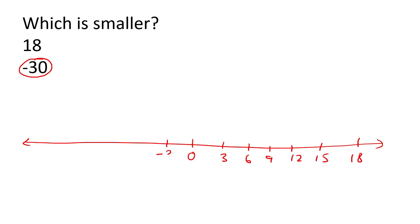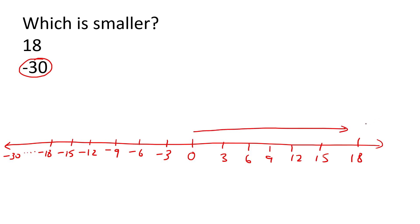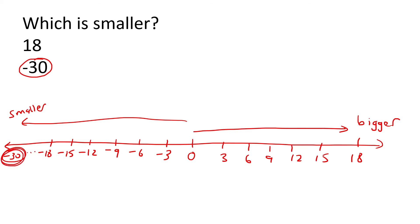Now, if you go in the negative, it starts negative 3, negative 6 — counting in 3s — negative 12, negative 15, negative 18, and then on and on, and eventually you would get to negative 30. Now, remember what we said in the very beginning of this lesson: as you go to the right, these numbers are getting bigger and bigger, and as we go to the left, these numbers are smaller. So minus 30 is on the left, so it is smaller than 18, which is on the right-hand side. So we will say that minus 30 is smaller.